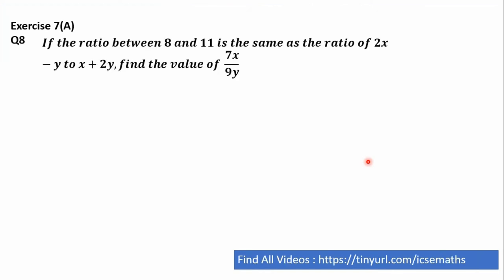Now let's try to solve it. In question, it is saying if the ratio between 8 and 11 is the same as the ratio of 2x minus y to x plus 2y. So that is why I have written 2x minus y to x plus 2y is equal to 8 and 11. And it is asking the value of 7x by 9y.